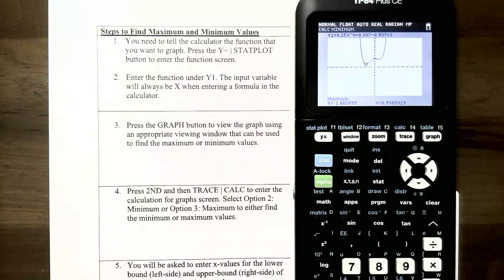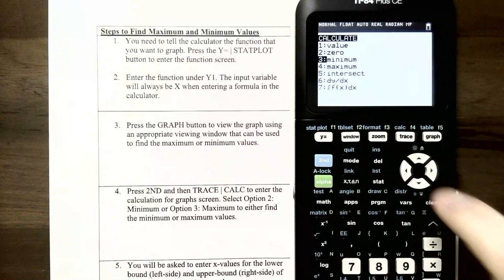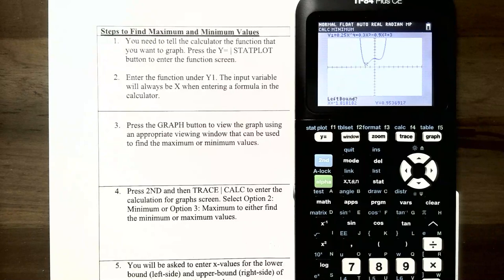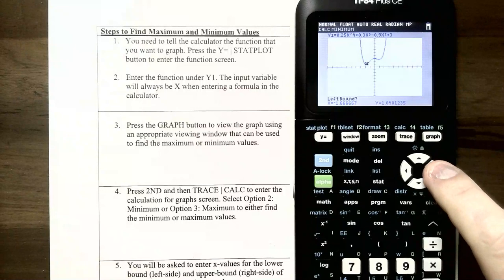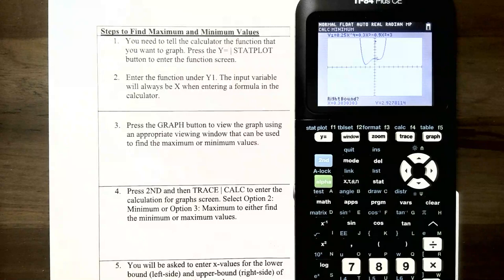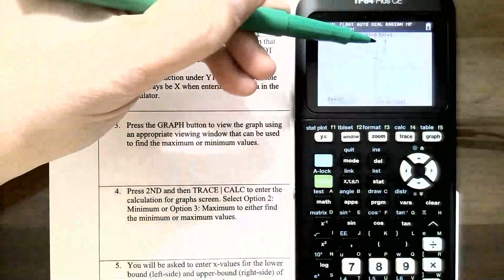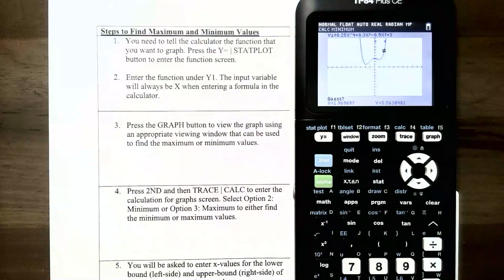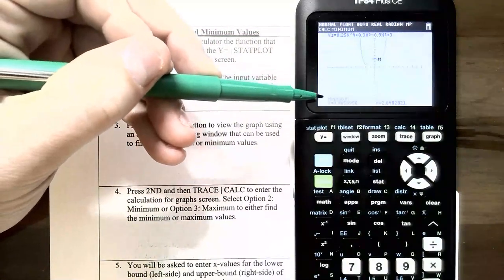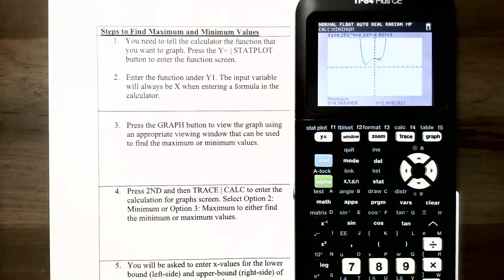To find the second local minimum, go to 2nd → Calc, select option 3 again. Choose a left bound to the left of the second dip in the graph, then a right bound to the right of that dip, and hit Enter for the guess. The calculator gives a local minimum value of y ≈ 2.648, occurring at x ≈ 0.965, rounded to three decimal places. The cursor flashes at that local minimum point on the graph.